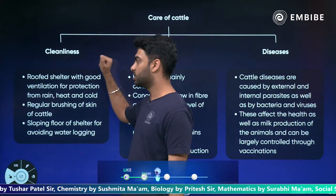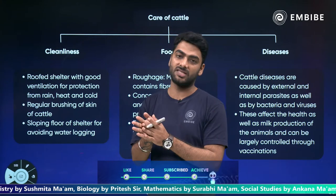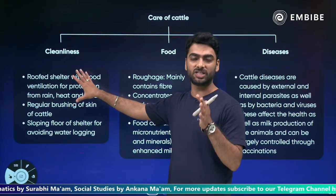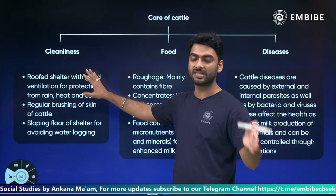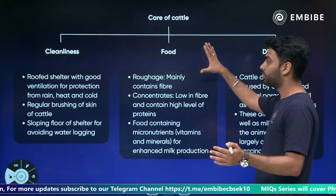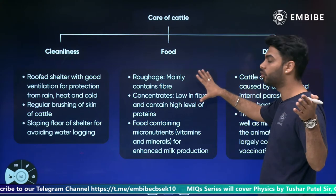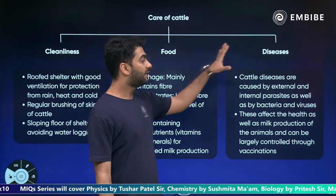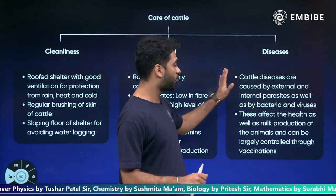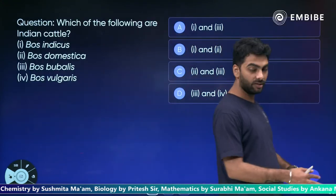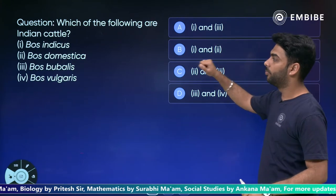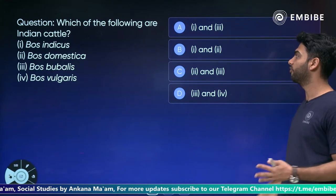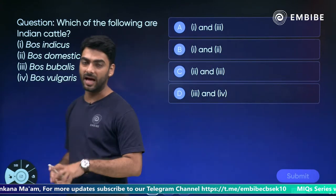Care of cattle involves keeping the shed clean, washing the cattle, giving proper medicines and food, ensuring good fodder with proteins and fiber, and proper vaccination. MCQ: Which are Indian cattle — Bos indicus, domestica, bubalis, or vulgaris? Answer: indicus and bubalis (option A). Bos indicus are cows, bubalis are buffaloes; domestica is found in Africa, and vulgaris does not belong to the Bos family.